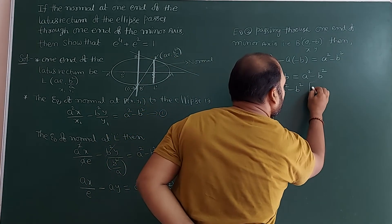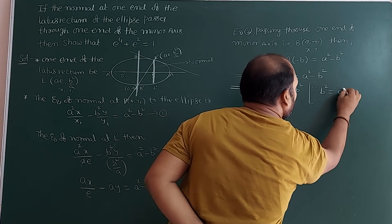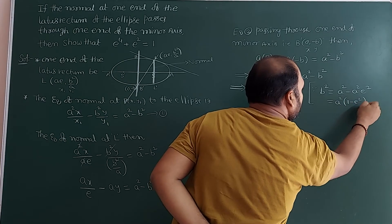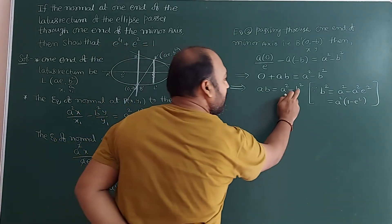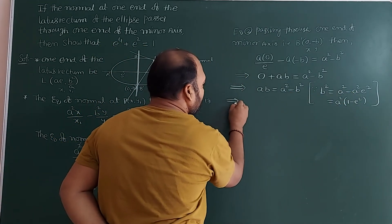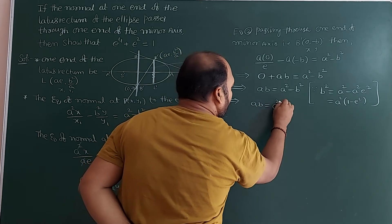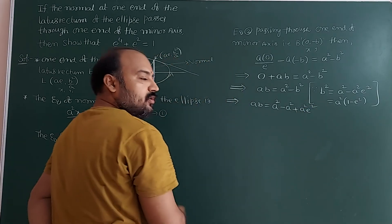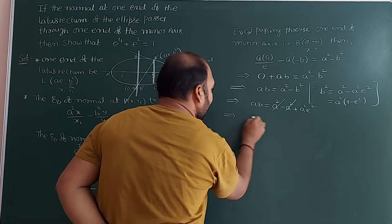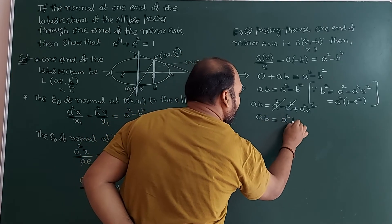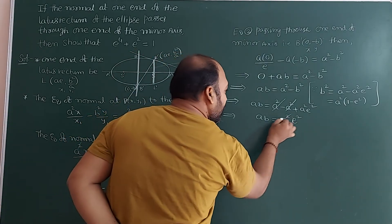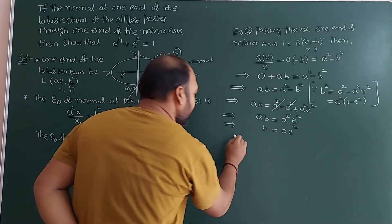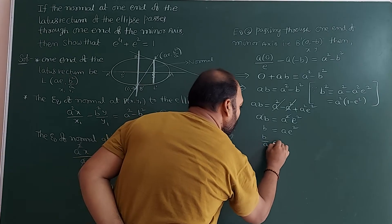We have the standard result: b² = a² − a²e², or equivalently b² = a²(1 − e²). Both representations are the same. Substituting: ab = a² − b² means ab = a² − (a² − a²e²) = a²e². So ab = a²e². Dividing both sides by a: b = ae². Therefore b/a = e².